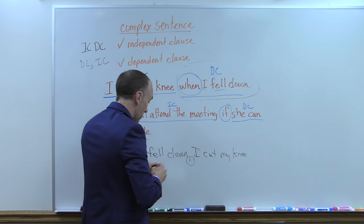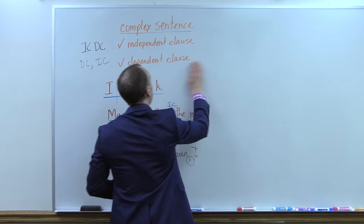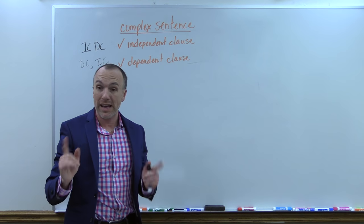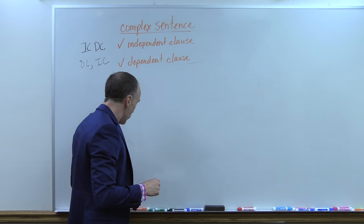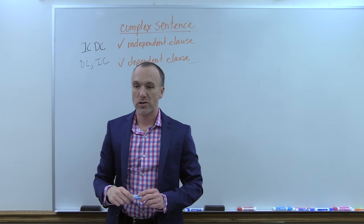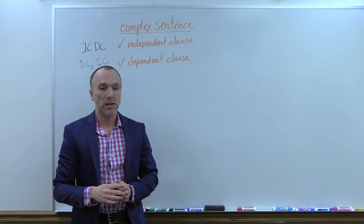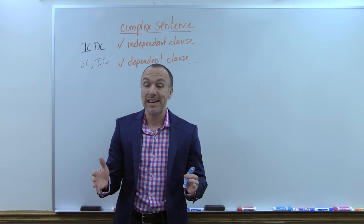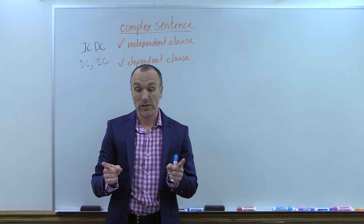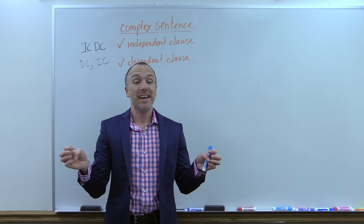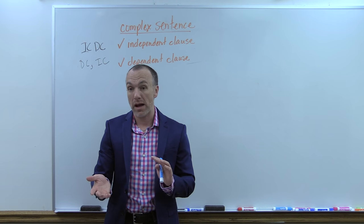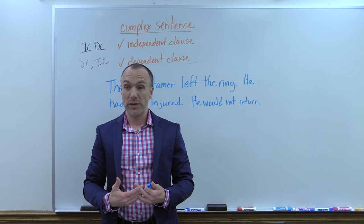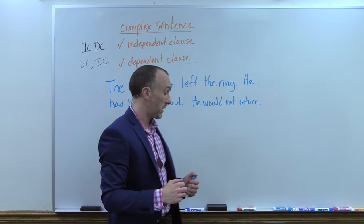That is important for us to know because we love having different types of sentence structures in our compositions. We're practicing this now in isolation, because when we get to the composition section, we want to have all these tools in our toolbox so that we can revise our sentence structure and our compositions communicate effectively. So let's talk about how to combine two sentences into a complex sentence using either format — independent followed by dependent, or dependent followed by independent.